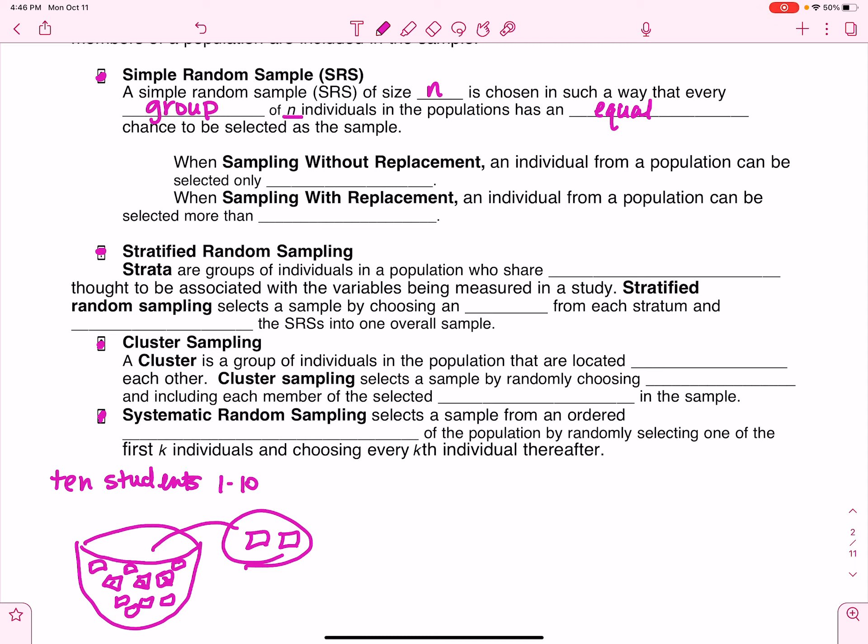Okay, if you're sampling without replacement, that means in this case, for instance, once I pull a student's name out, I don't put it back in. So that means everyone can only be selected one time. And when you're sampling with replacement, an individual can be selected more than once. Often when your simple random sample is people or something like that, since you can't have repeat individuals, you're usually doing it without replacement.